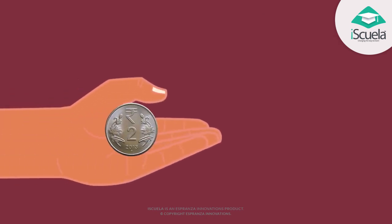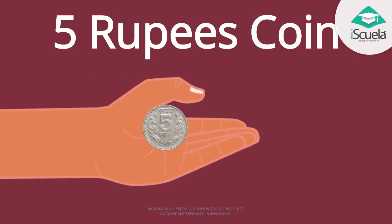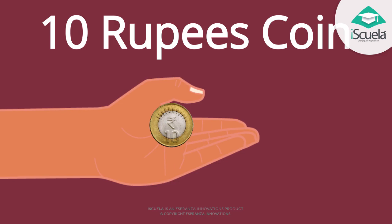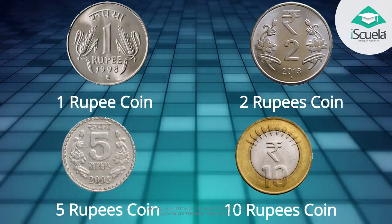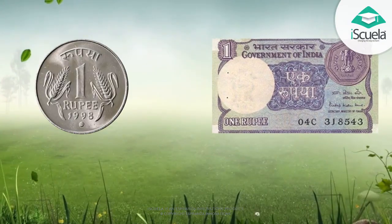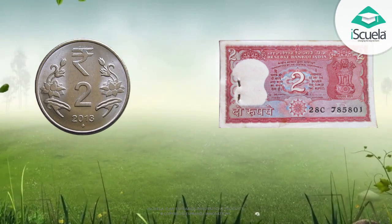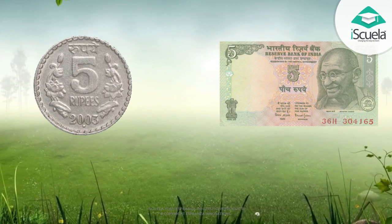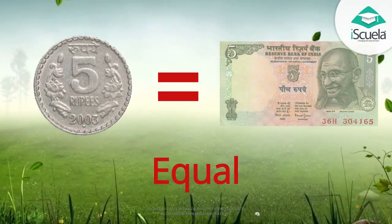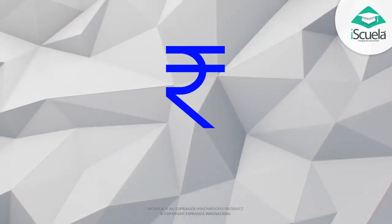This one is 10 rupees. We also have coins: 1 rupee, 2 rupees, 5 rupees, 10 rupees. My child, the value of a rupee note and a rupee coin are equal. Similarly, the value of a 2 rupees note and a 2 rupees coin are equal. The same applies to a 5 rupees note and 5 rupees coin, and a 10 rupee note and a 10 rupee coin. Beta, this symbol represents a rupee.